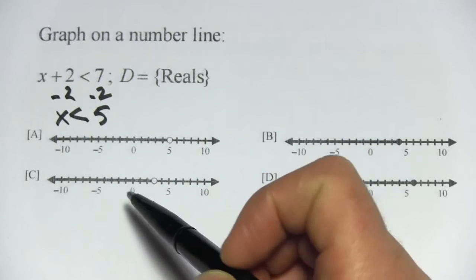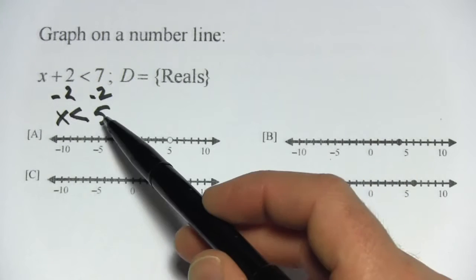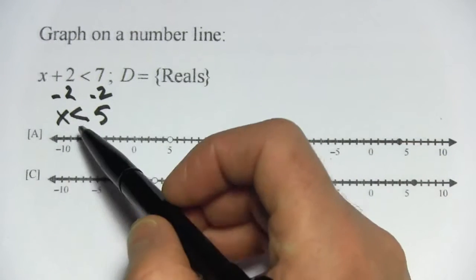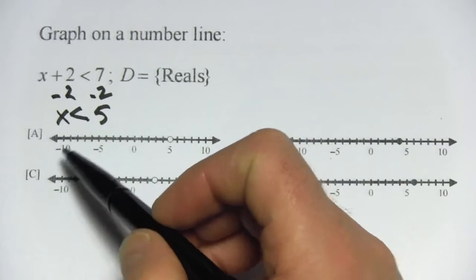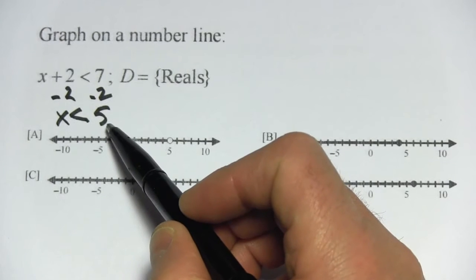So let's pick the graph that goes along with this. For these graphs, we have to decide whether the dot is open or closed and what direction we're going. For greater than or less than, plain old greater than or less than, the dot is always going to be open because this does not include the 5.